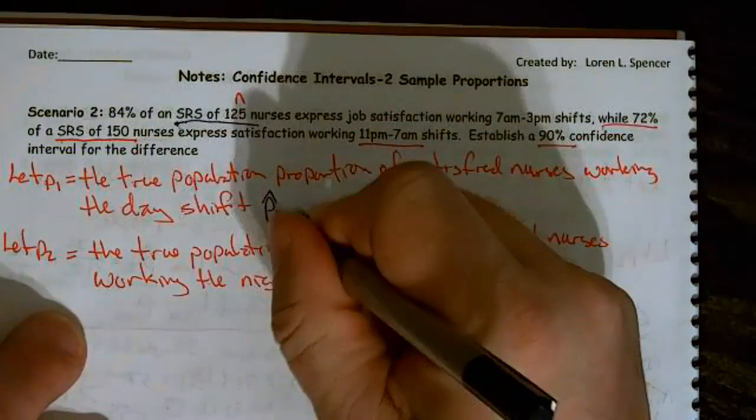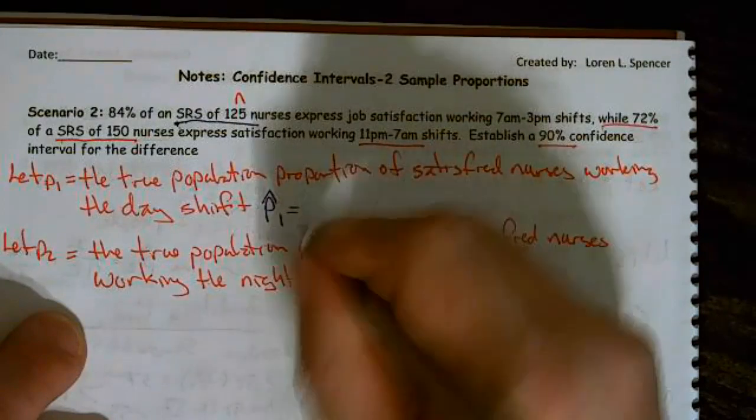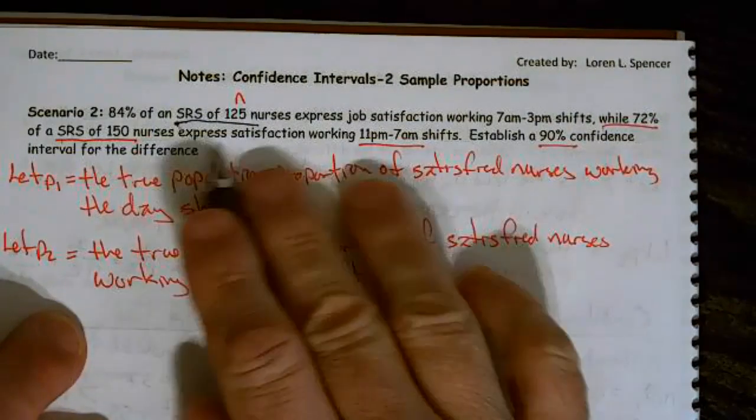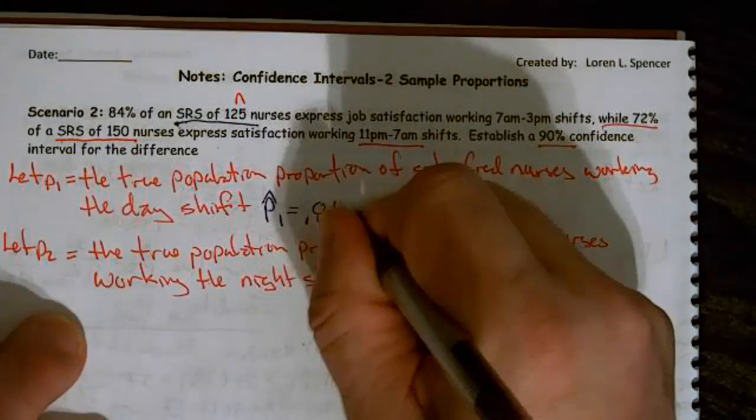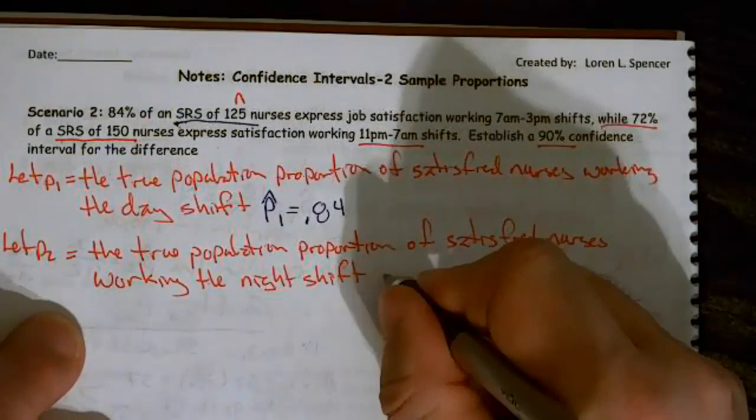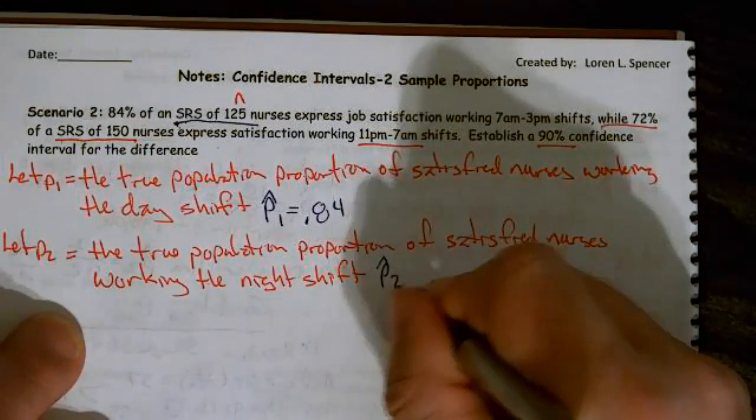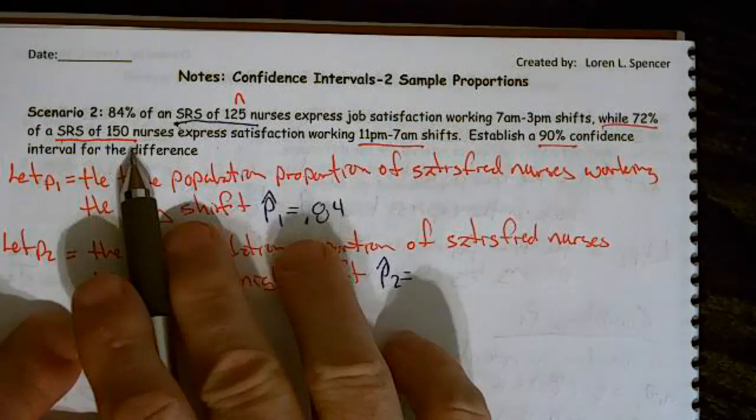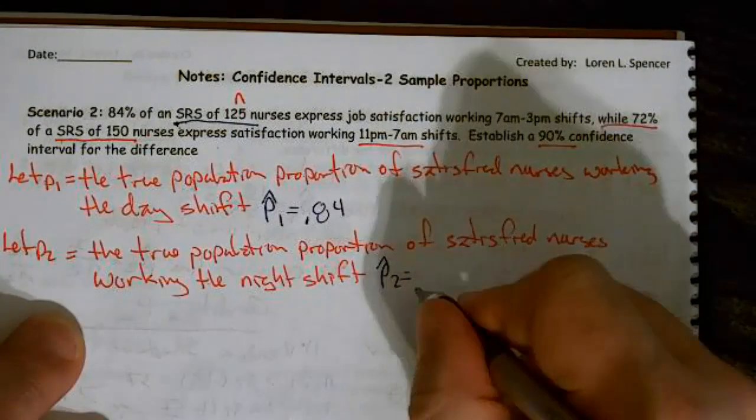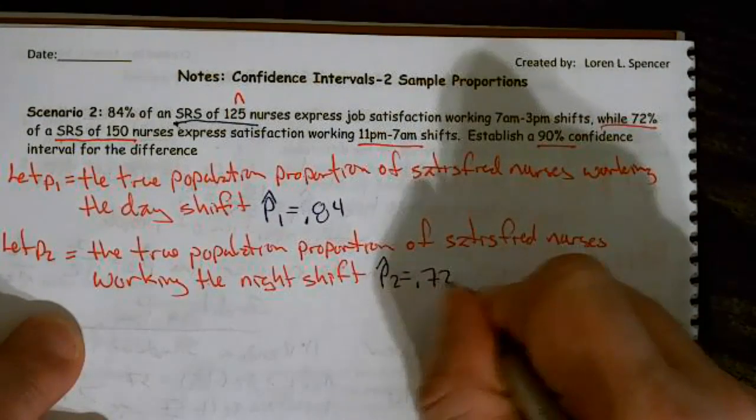Well, we know p hat 1 equals, in this case, 0.84. And we also know p hat 2 equals, in this case, 72%.